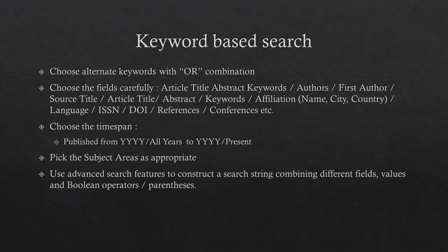We are going to show a demonstration using a keyword-based search, using the same set of keywords as in the Web of Science module. The set of fields available in Scopus are slightly different from those in Web of Science. You can choose article title, abstract, and keywords all together, or choose from authors, first author, source title, affiliation name, etc. Pay attention to the time span — you can choose from a particular year to another, or choose all years to the present. For someone doing a literature survey on a topic for the first time, it is advised to use the entire time span.